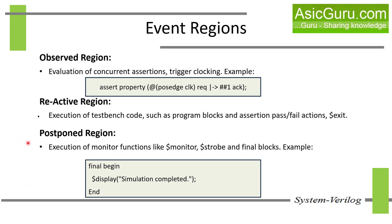Next we have the postponed region. The function of this region is to execute monitoring functions like $monitor and $stop, which will show the final updated values for the current time slot. Final blocks and PLI events are also executed in this region. It is a read-only region and value updates are not allowed here. This final block executes in the postponed region, ensuring it runs after all other simulation activities have been executed.